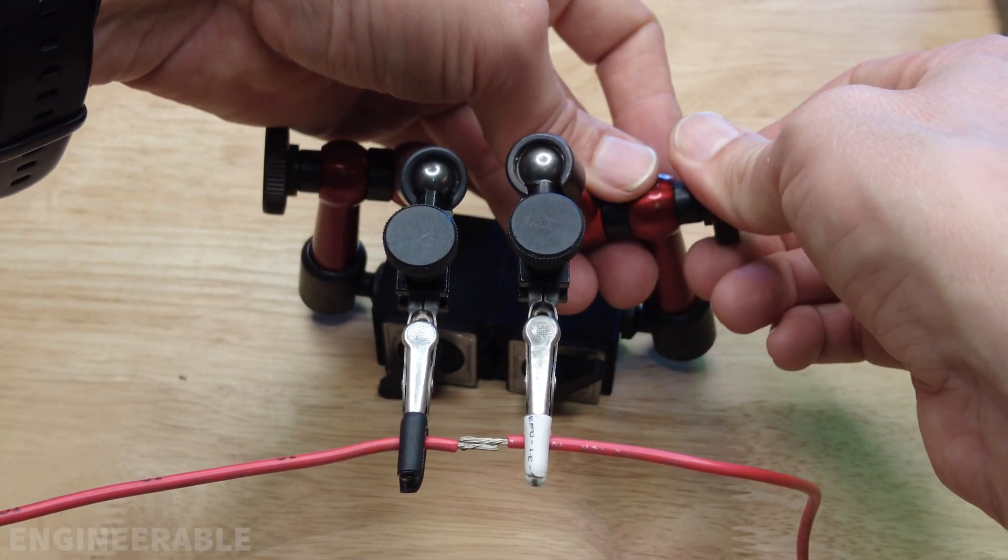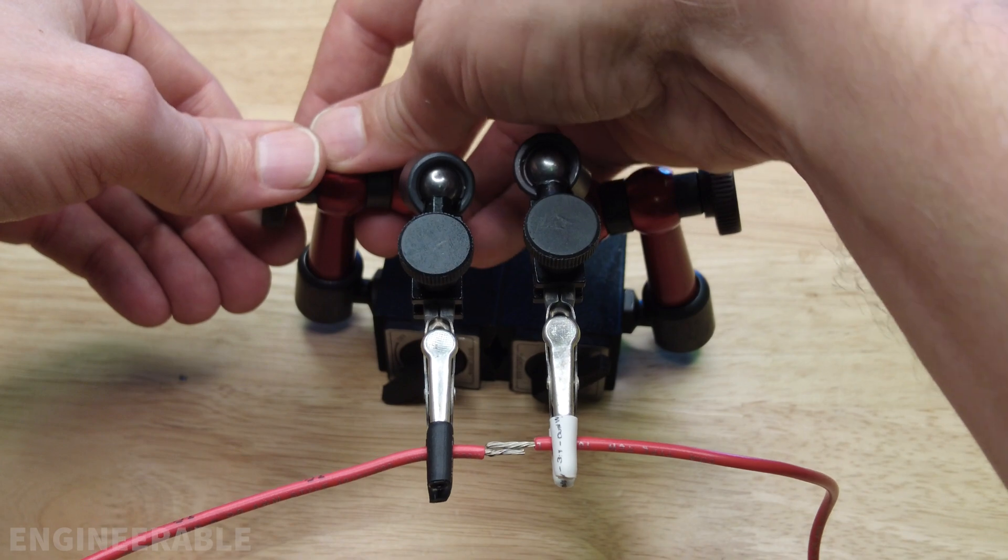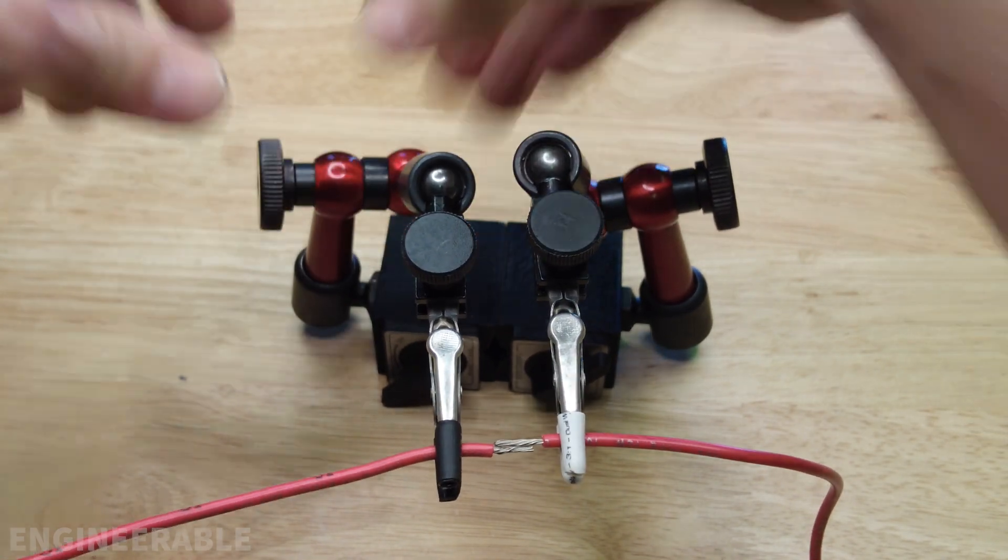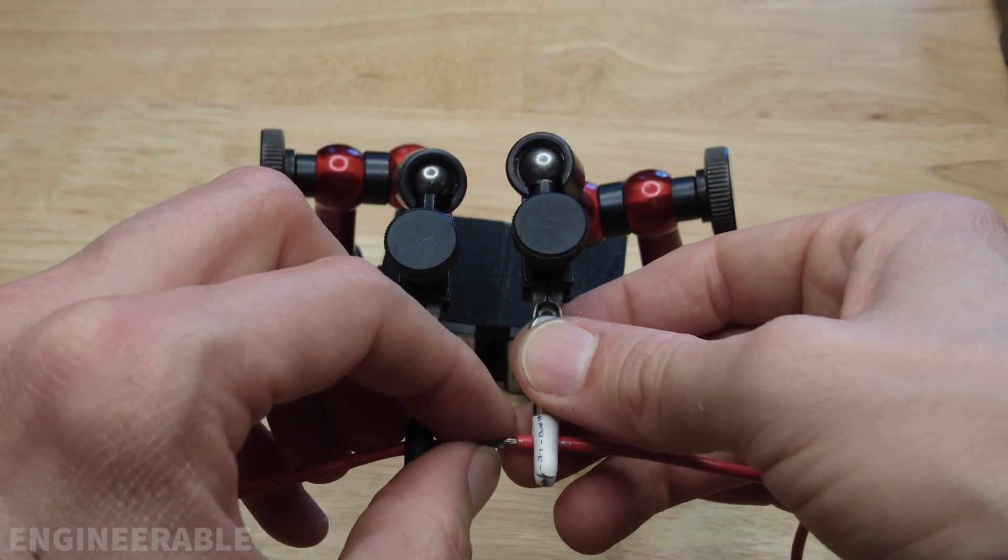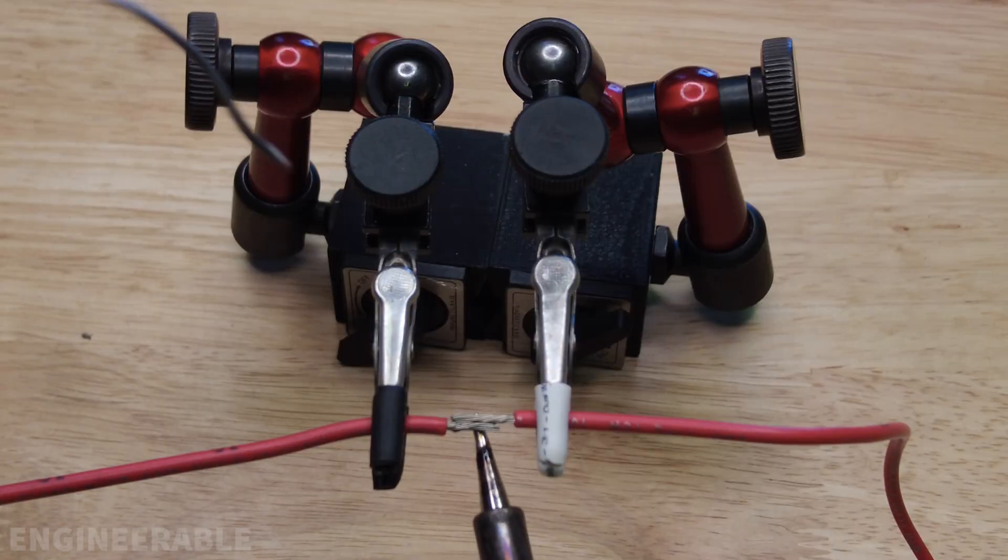If I wanted to make it tighter, tighten those up a little bit. It seems to hold just fine without making it any tighter than this. And then you can go ahead and solder your wires together.